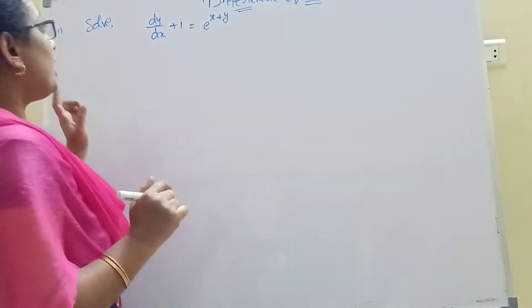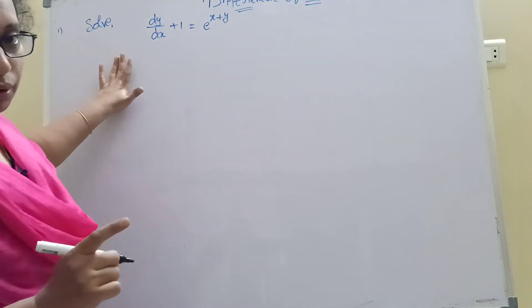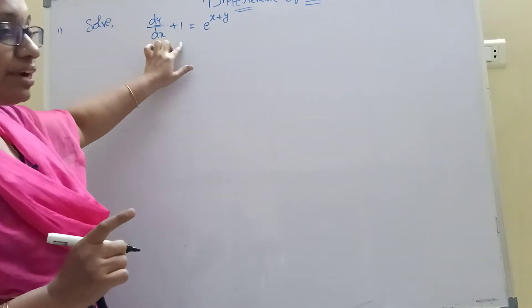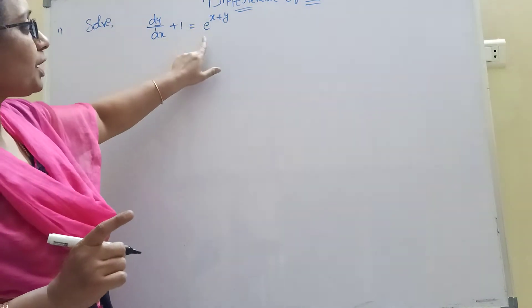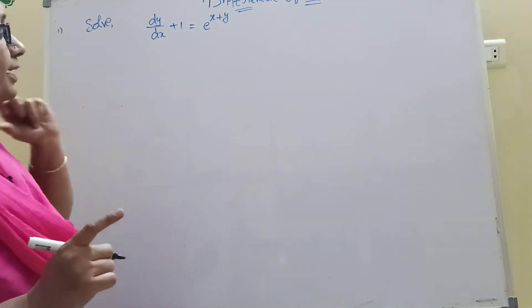Let's come to the point. Differential equations law, 4-mark problem. The equation is: dy/dx + 1 = e^(x+y).